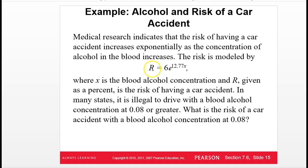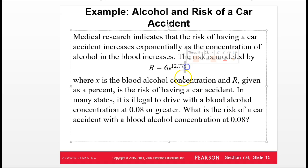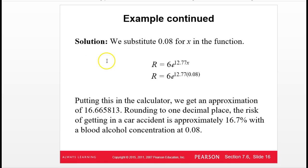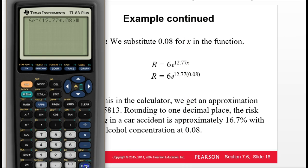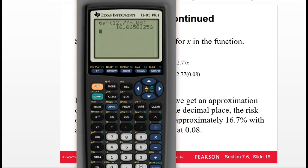Here's an application using the natural base to model risk — specifically the risk of having a car accident, where x is the blood alcohol concentration. The question asks for the risk R when blood alcohol x = 0.08. Plugging 0.08 into the model gives approximately 16.6658, which is roughly 16.7%. As x gets bigger and bigger — since the base is greater than 1 — the output keeps getting bigger and bigger.